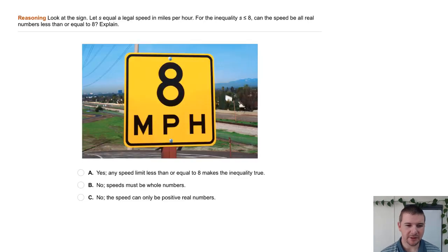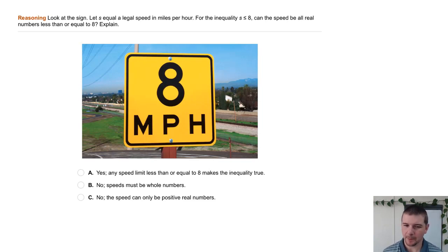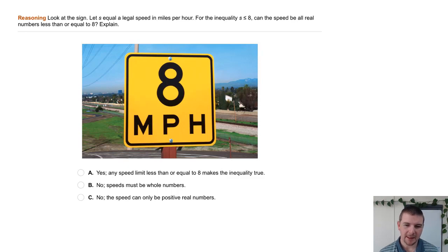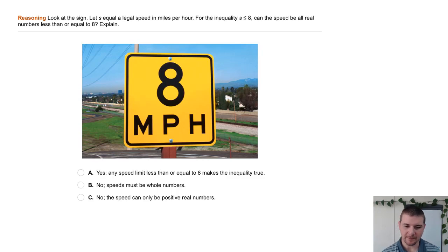Your turn. This reasoning question says: look at the sign. Let S equal a legal speed in miles per hour. For the inequality S is less than or equal to 8, can the speed be all real numbers less than or equal to 8? Explain.